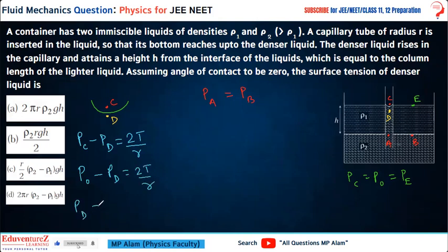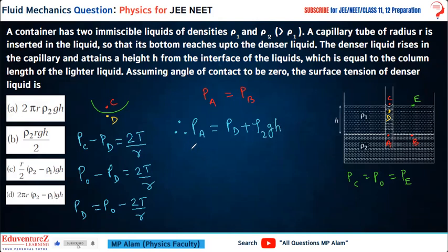From this, pressure at D equals P0 minus 2T/R. Now, from D we go down a height H. The liquid inside the capillary is rho 2, not rho 1 — don't get confused. So pressure at A equals pressure at D plus rho 2 × g × H. Since pressure at A equals pressure at B, and pressure at B equals pressure at E (which is P0) plus rho 1 × g × H.